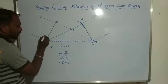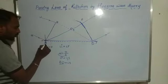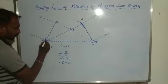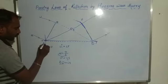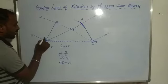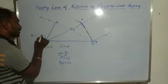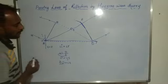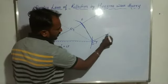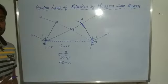This line we consider as the normal, because it is perpendicular to the reflecting surface at point A. This is the incident ray, so this angle we consider as the angle of incidence I. This is the normal, and this is the reflected ray, so this angle we consider as the angle of reflection R.